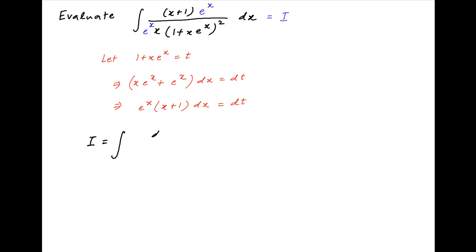Therefore, the integral i can be written as integral dt divided by t square times t minus 1.